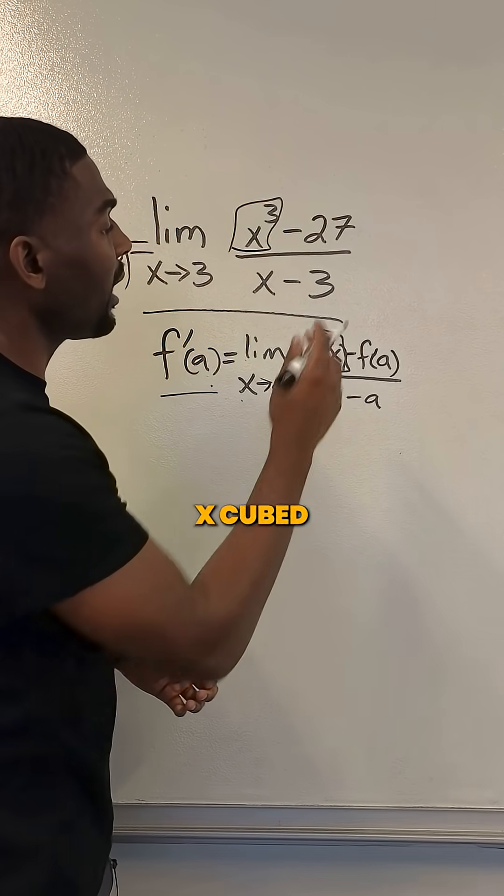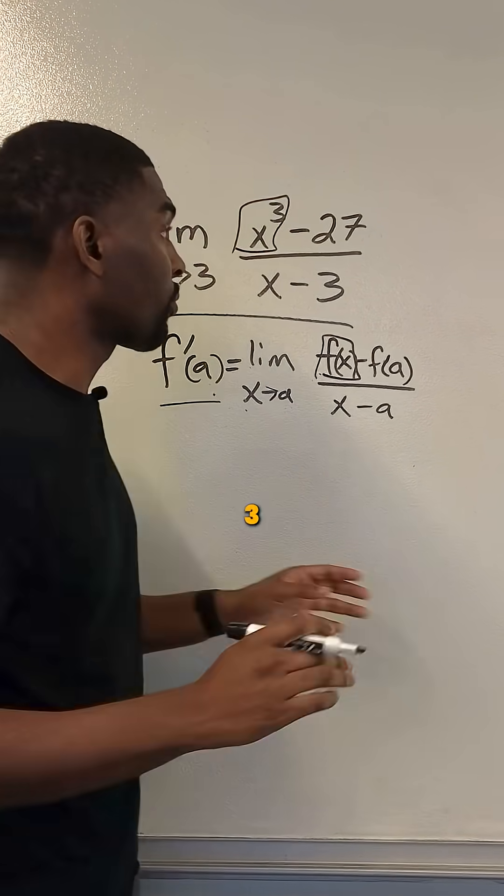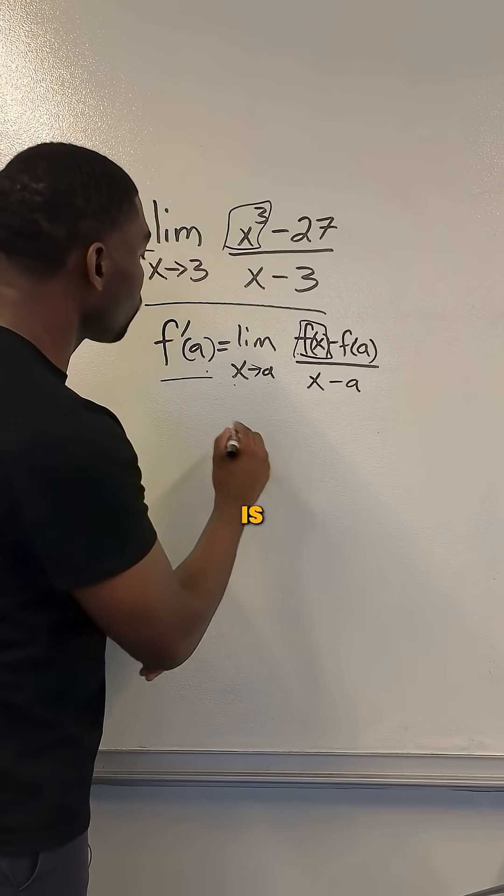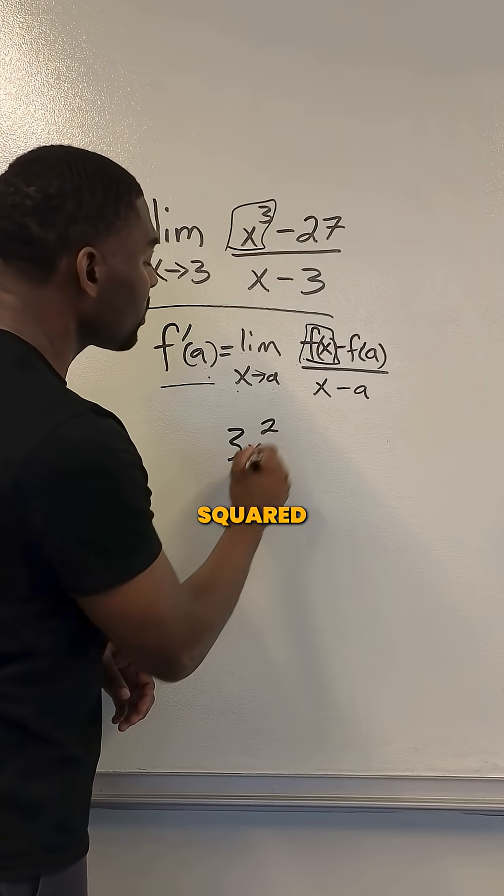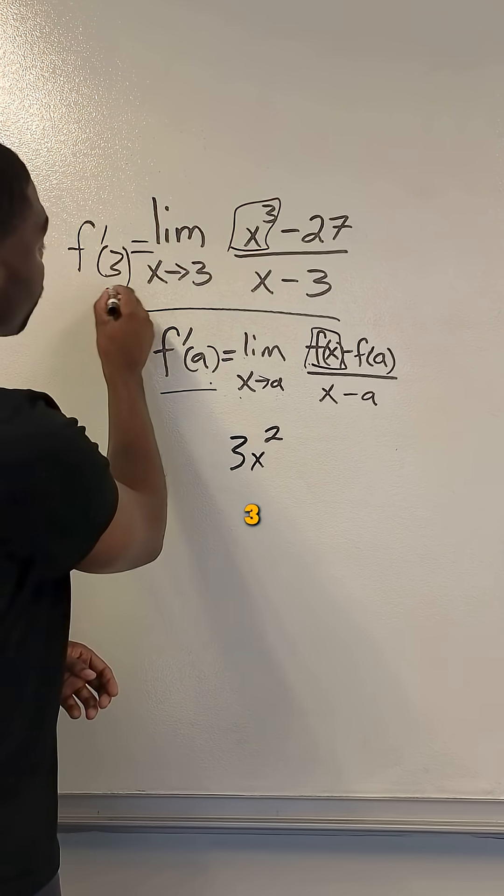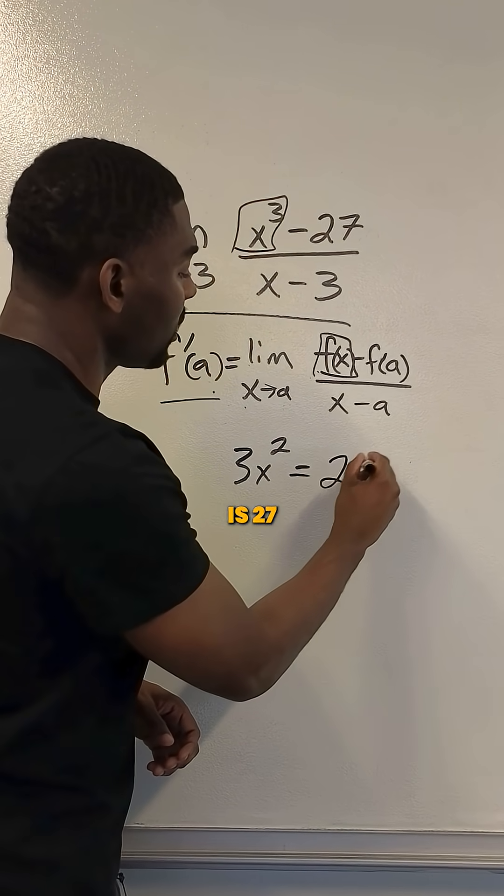We're going to be taking the derivative of x cubed and simply plug in the value of 3. Now the derivative of x cubed is 3x squared. And when we plug in 3, we end up getting that our answer is 27.